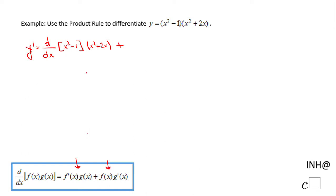and now I'm going to move to the second part of the product rule. I have the f of x which in this case means x squared minus 1 times the derivative of the second function. In this case the derivative of x squared plus 2x. So now let's see what we get.